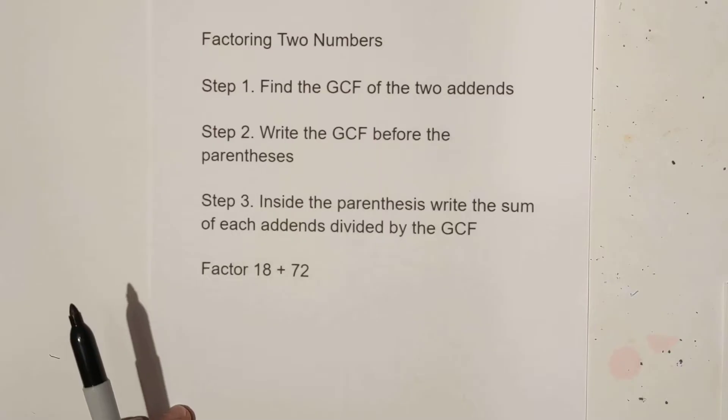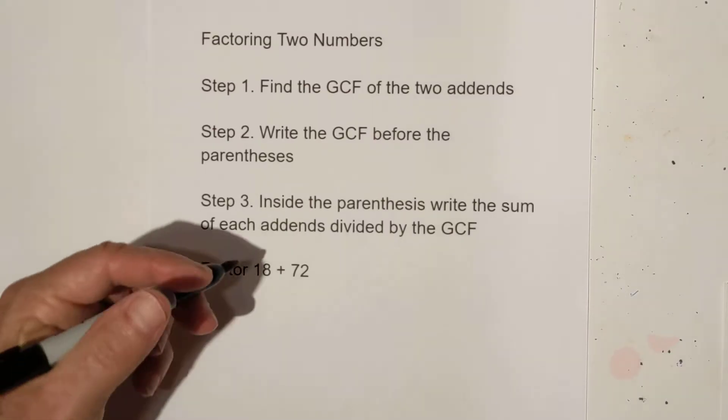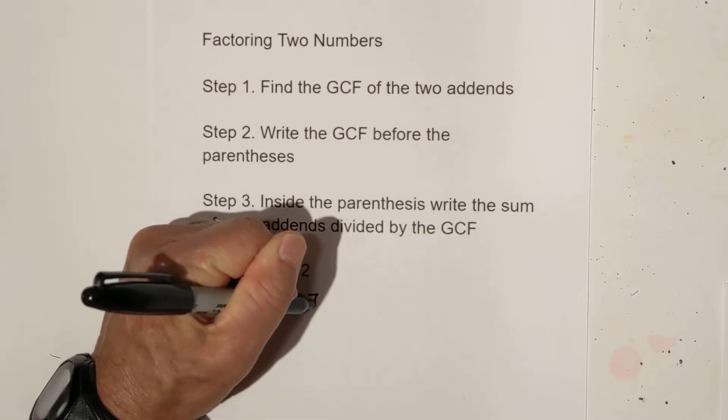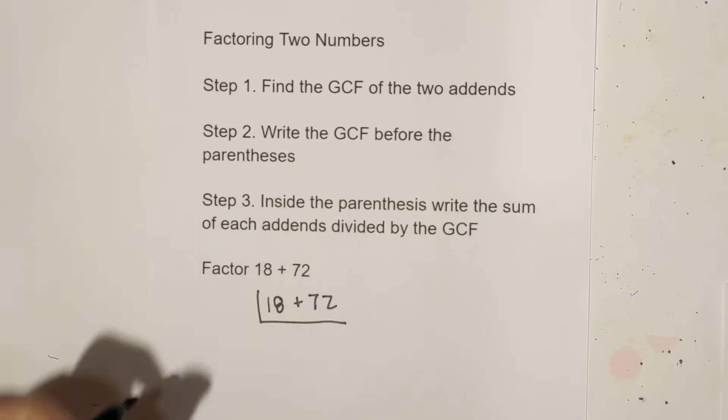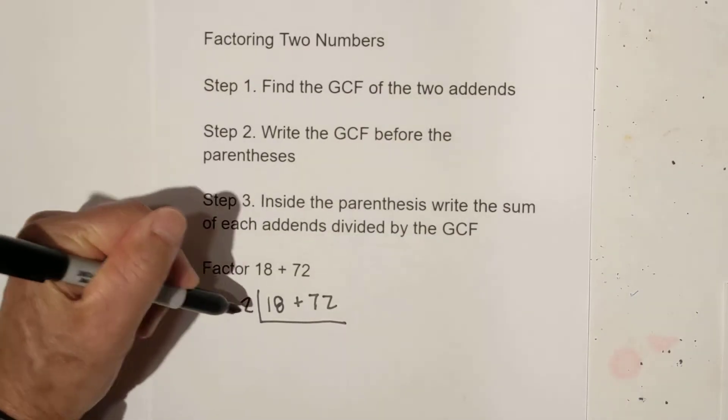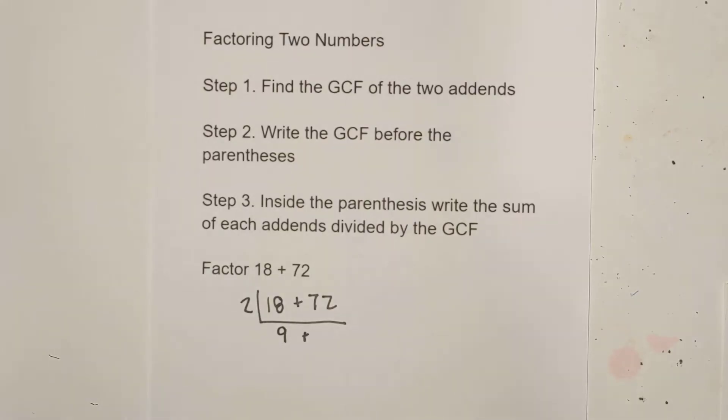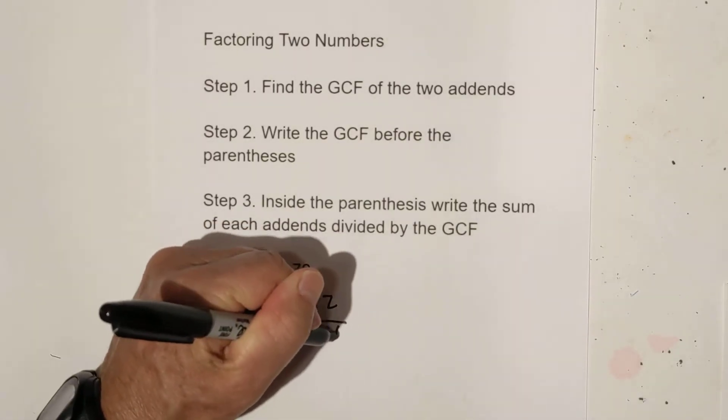Let's factor 18 plus 72. I'm going to show you two techniques. The first technique is called the sled. And basically what you do is you write the two numbers like this and you try to come up with something that it's divisible by. And I know that two goes into both of these. Two goes into 18 nine times and two goes into 72 thirty-six times.